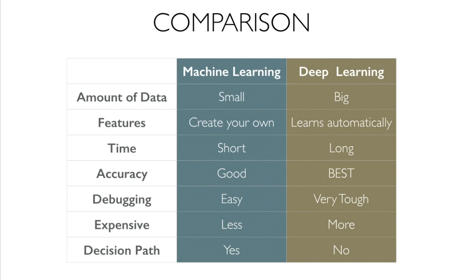Here's a quick comparison. Amount of data: machine learning requires a smaller dataset, while deep learning needs a huge amount of data. Features: in machine learning you manually create and define features, while deep learning automatically defines features and learns on its own. Time: it takes less time to activate a machine learning model — from a couple of days to a couple of weeks — whereas deep learning can take a couple of weeks to months, depending on data sophistication.